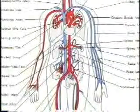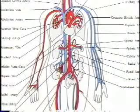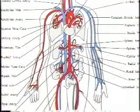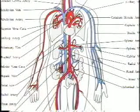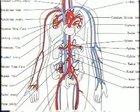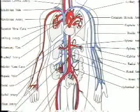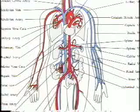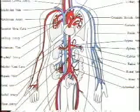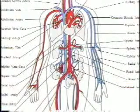Capillaries are only one cell thick. Through these walls, gases, nutrients, and other substances are exchanged. After the blood cells have given up their oxygen to the cells in all parts of the body and exchanging other substances, it returns back to the heart by way of the veins.